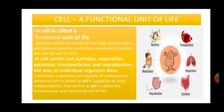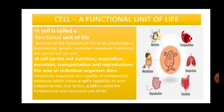Why is a cell a functional unit of life? It is called a functional unit of life because all the functions of the body — whether physiological, biochemical, genetic, or any other metabolic functions — are carried out by cells. A cell is an autonomous unit; it carries out nutrition, respiration, excretion, transportation, and reproduction — all the living processes that an individual organism does to survive. Unicellular organisms are capable of independent existence, which demonstrates a cell's capability to exist independently, and due to this, a cell is called the fundamental and structural unit of life.